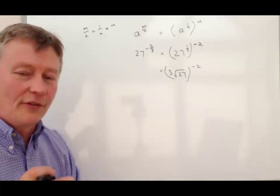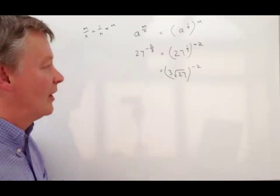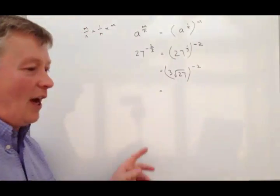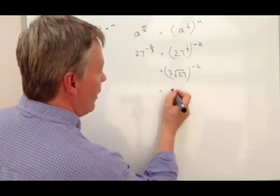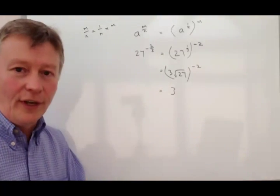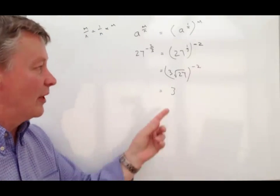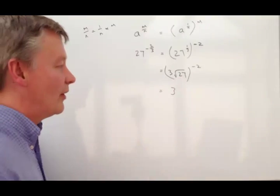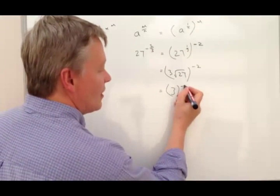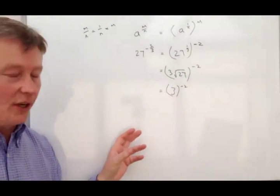Well, the cube root of 27 is the same as 3 because 3 times 3 times 3 is 27, and that's still to the power of minus 2.